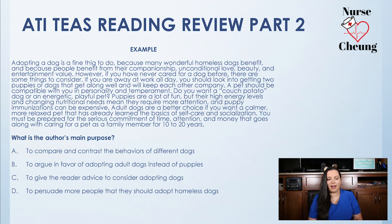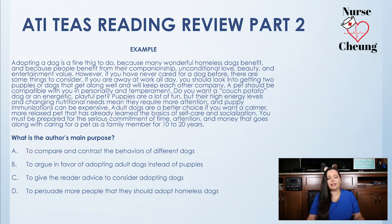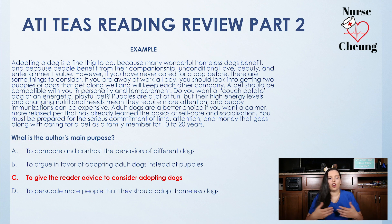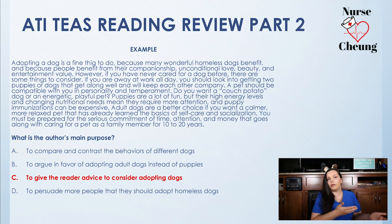What is the author's main purpose of this passage? Is it A — to compare and contrast the behaviors of different dogs? B — to argue in favor of adopting adult dogs instead of puppies? C — to give the reader advice about what you need to consider when adopting dogs? Or D — to persuade more people that they should adopt homeless dogs? The correct answer is C. The author's primary purpose is to give advice about things that the reader should consider before adopting a dog. Choice A is not correct because while the author does contrast the energetic puppy versus the couch potato dog, it's not the main purpose. B is incorrect because the author doesn't argue in favor of either adult dogs or puppies but just mentions a few pros and cons. And D is also incorrect because while the author does suggest adoption benefits homeless dogs, the primary purpose is not to persuade you to adopt homeless dogs.